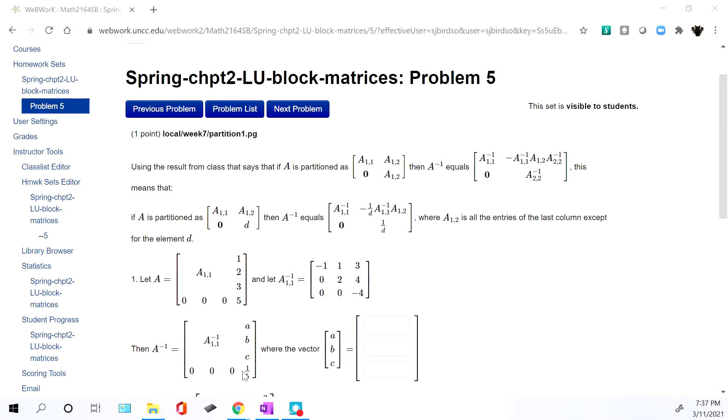So when we do the formula, the zero block stays zero. The inverse of the single number gets the reciprocal. So this is one fifth. And then there is something that happens over here in the corner, which it doesn't do. That's the part that it asked us to calculate.